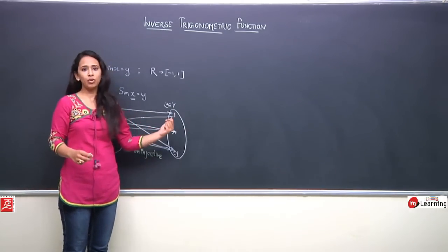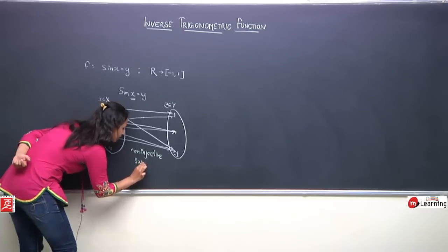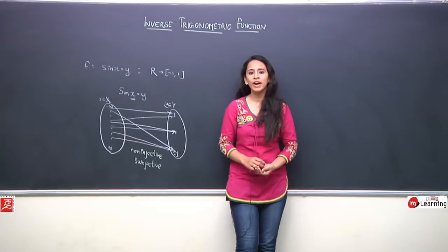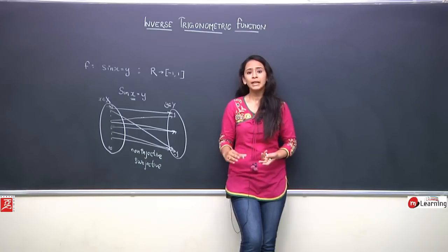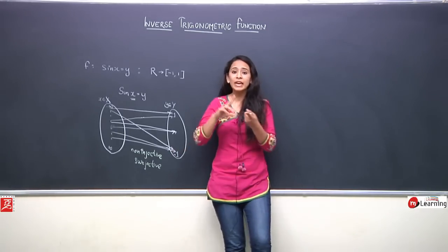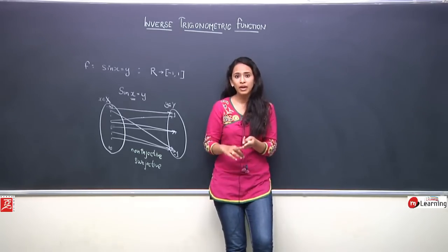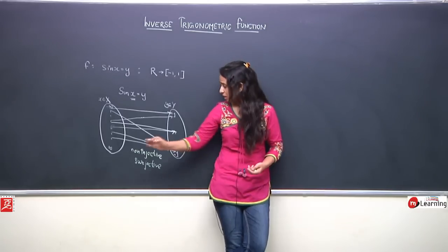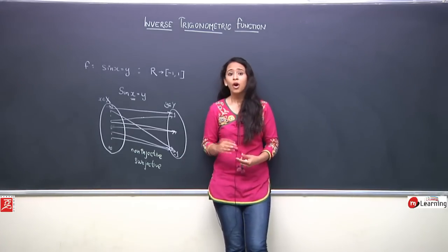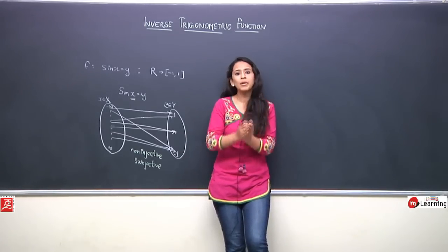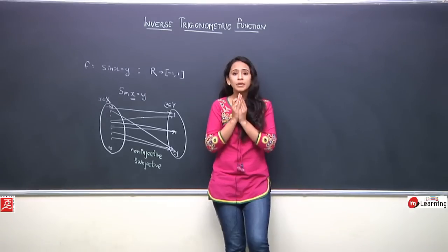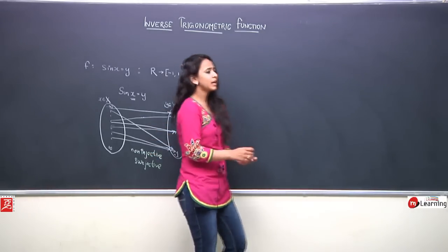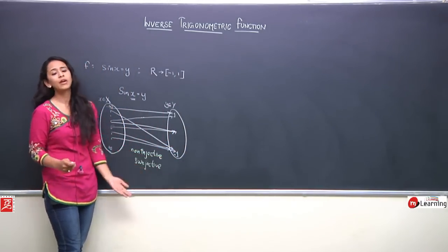But all values in the range are covered. So it is a surjective function. So we understand that our trigonometric function y = sin x is a non-injective but surjective function — meaning it is not bijective. When do we call a function bijective? When it is both injective and surjective, that is one-to-one and onto. Such a function is called a bijective function. And whenever we want to define the inverse of a function, we must first ensure that it is bijective.